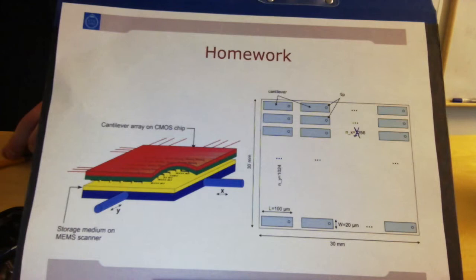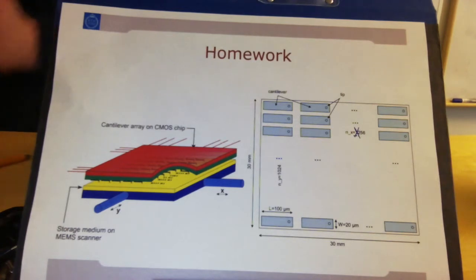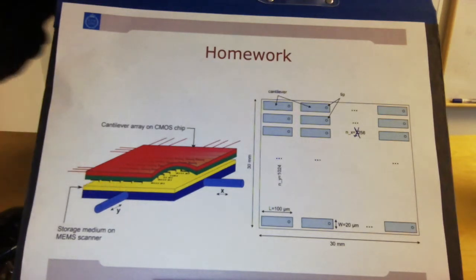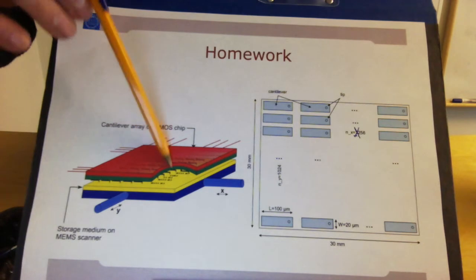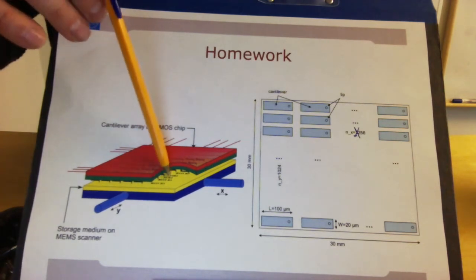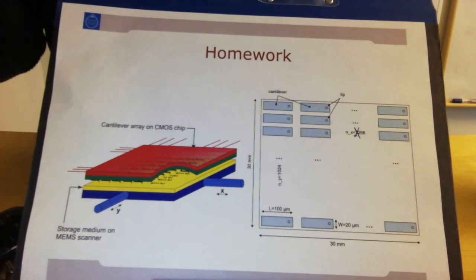Now the question of the homework, there's actually two questions. The first question is: define the specification requirements for the transducers. That means that for each of the actions, there are three types of actions. You have the xy scanning action of the bottom plate, and you have the writing action of the z-direction movement of the cantilever tip here, and you have this z-direction movement for the reading.